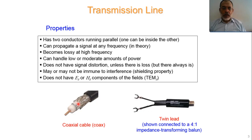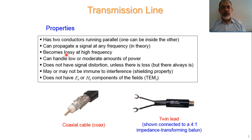These transmission lines are used starting from DC and theoretically can be used at any frequency, so they can propagate a signal at any frequency in theory. At high frequency, such transmission lines become lossy. We have different mechanisms of losses inside transmission lines. The first mechanism is that the two conductors are not made of perfect conductors — they are made of practical conductors with finite conductivity.